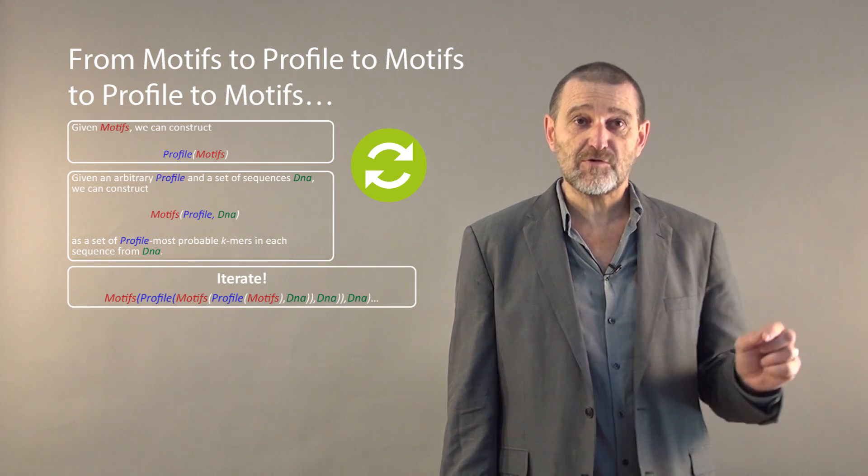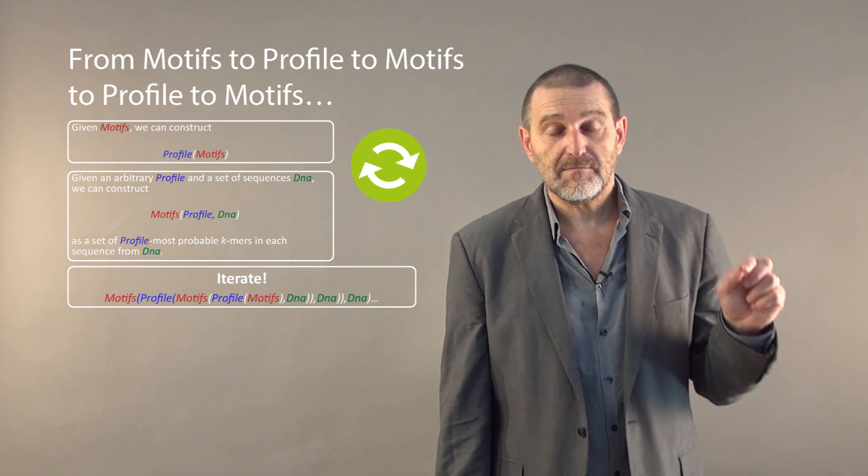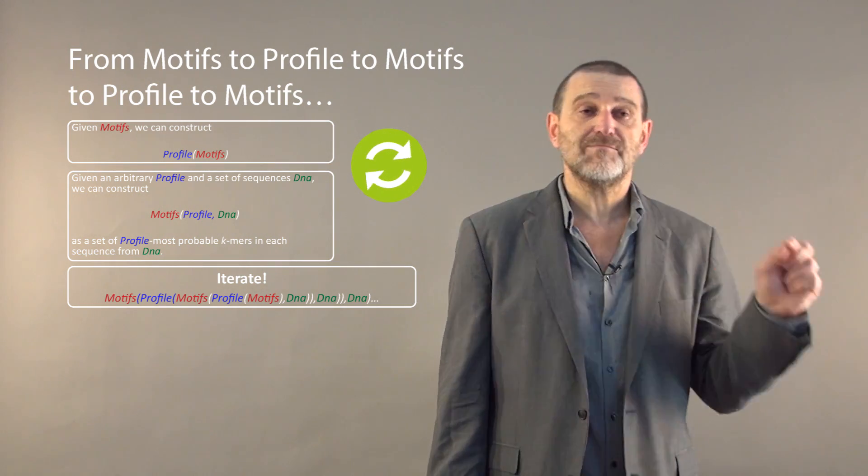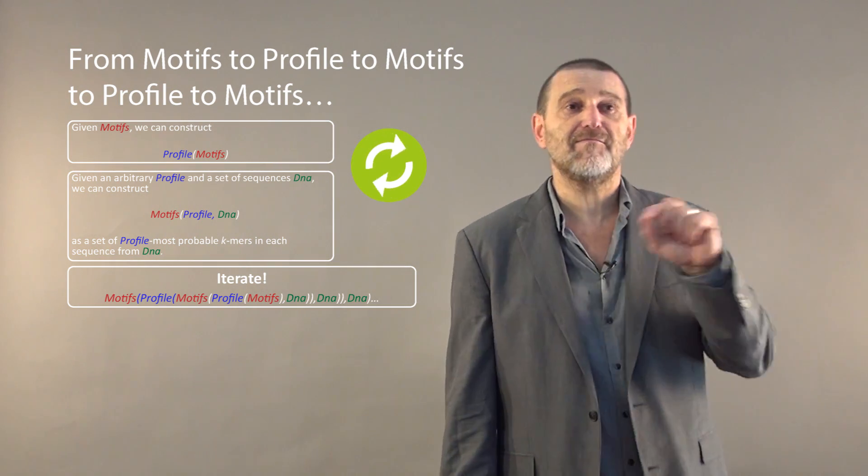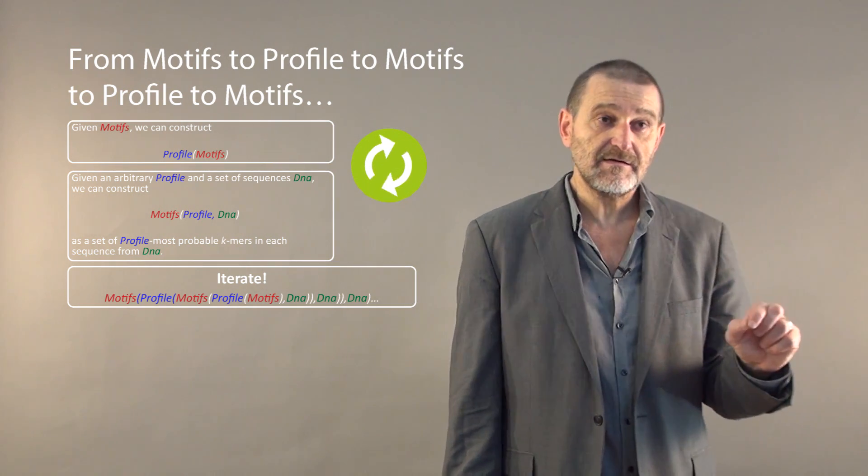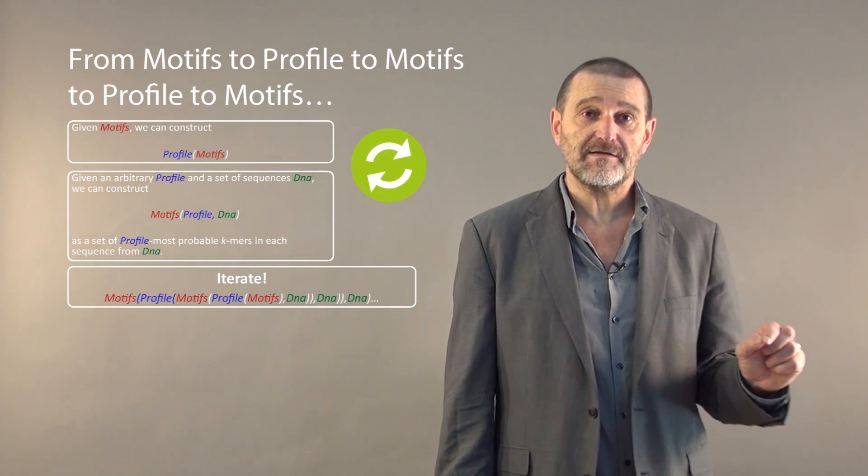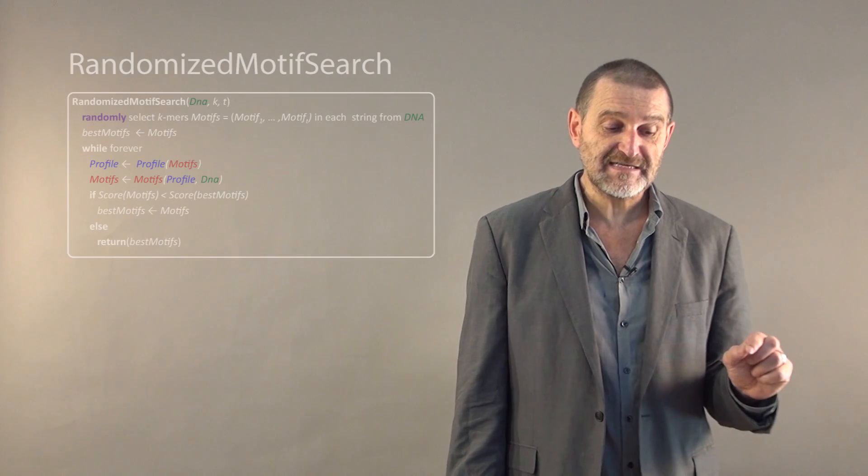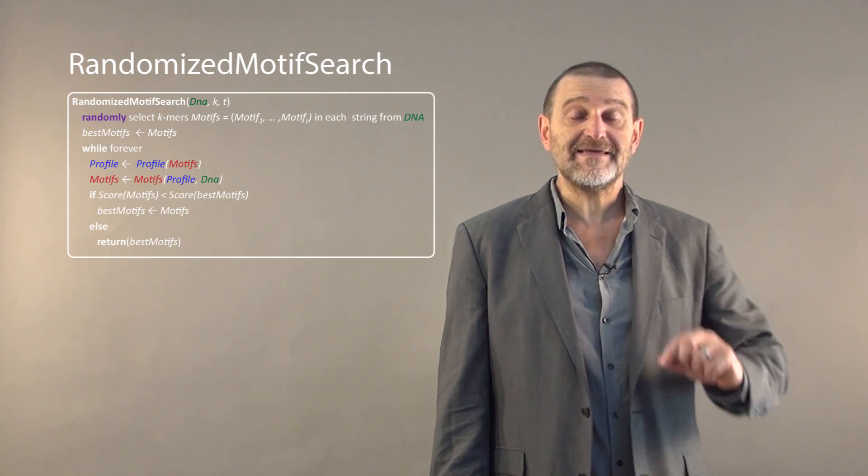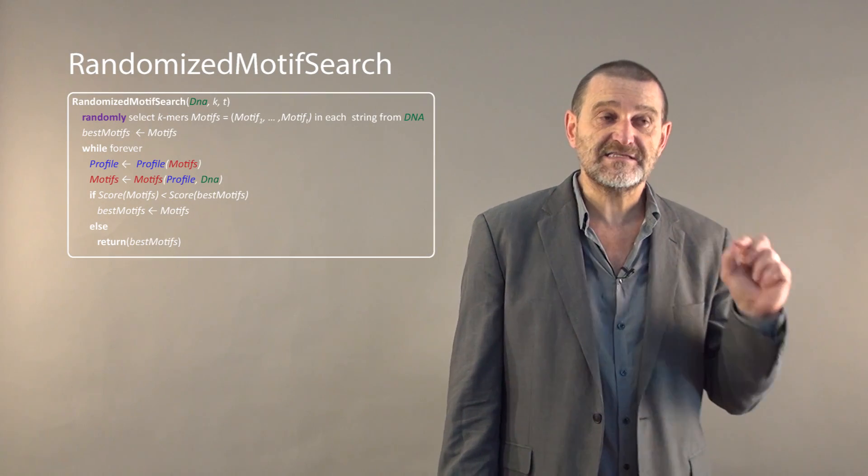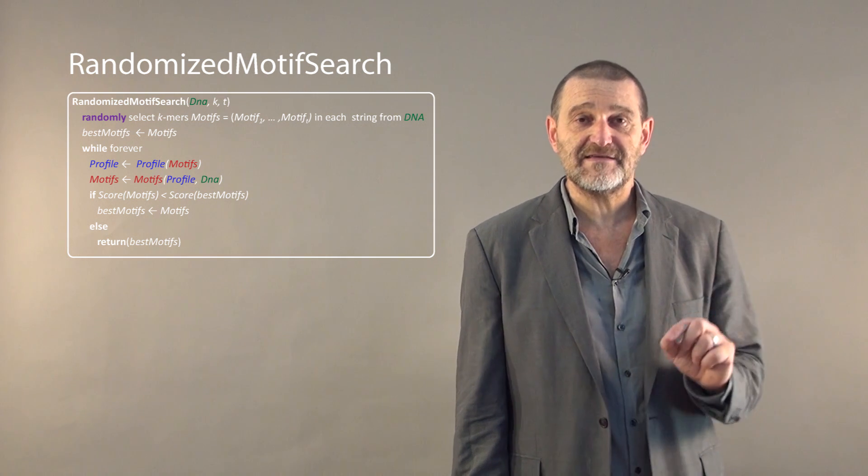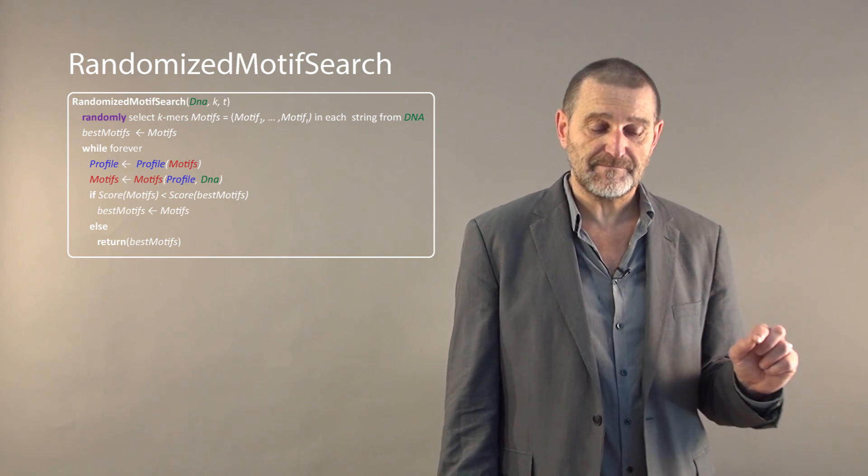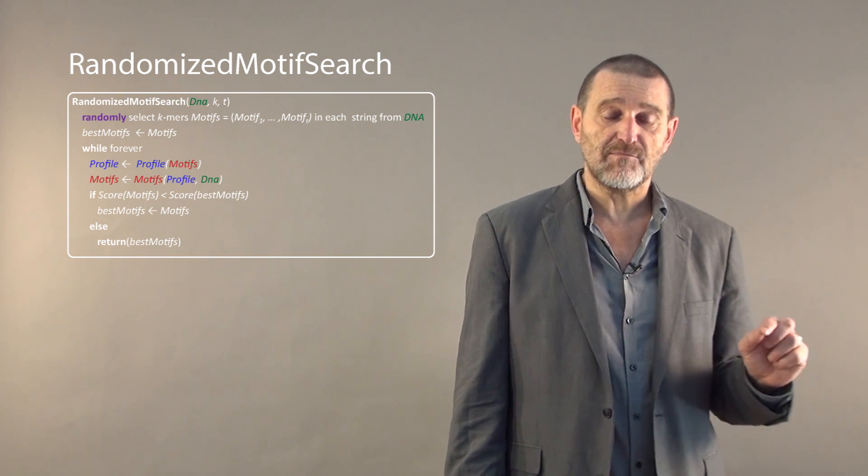We can further iterate this process by finding profile of motifs, motifs of profiles, profile of motifs, until our motif keeps improving. This is the key idea of the algorithm called randomized motif search. We simply iterate and see whether the score of motif continues to improve and stop when it doesn't improve anymore.